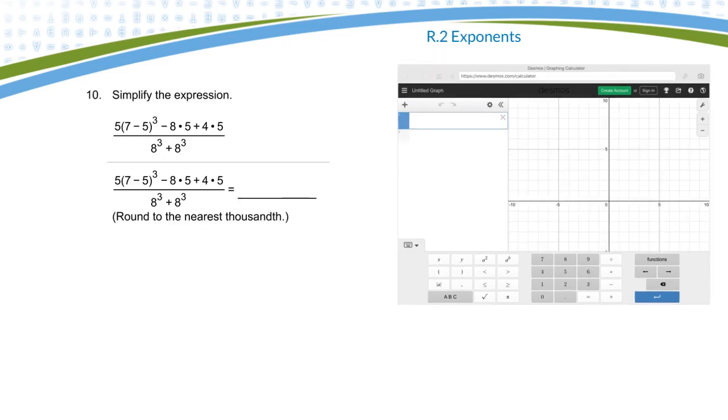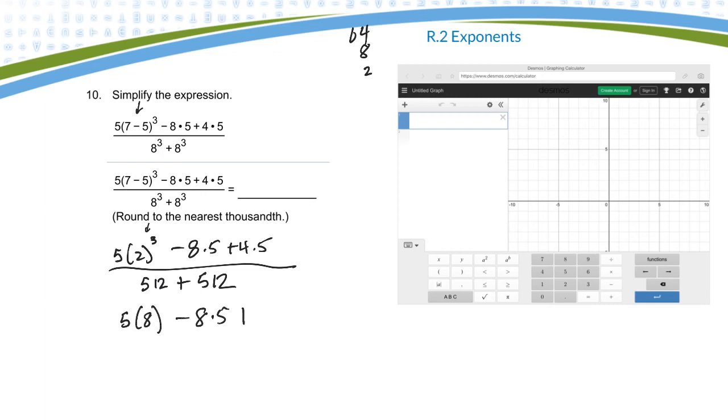Last. Simplify that expression. I'm going to do this bracket first. So 7 take away 5 is 2. So I'll have 5 times 2 cubed minus 8 times 5 plus 4 times 5 all over. 8 cubed. That's an exponent. 8 cubed. 64 times 8. So it'll be 512 plus the same thing, 512. Now I have to do that exponent here. So 2 cubed I think is 8. So this would be 5 times 8 take away 8 times 5 plus 4 times 5 all over. If I add those two together on the bottom I'll get 1024.